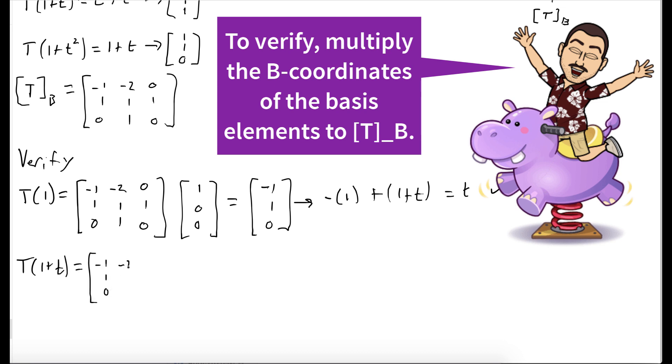The B-coordinates for 1+t is [0, 1, 0], right? It's just the second basis element. When we multiply that out, we get t + t², which is exactly what we expected.